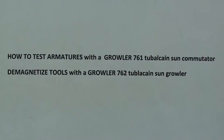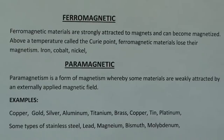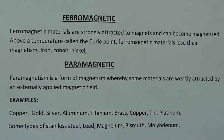These are the two other videos I have in this series where I use the growler — check them out and I'll put the links in the description. I hope you'll bear with me as I read these definitions of ferromagnetic and paramagnetic. Ferromagnetic materials are strongly attracted to magnets and can become magnetized. Above a temperature called the Curie point, ferromagnetic materials lose their magnetism. Iron, cobalt, and nickel are ferromagnetic.